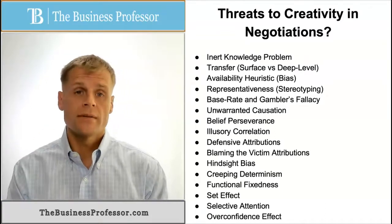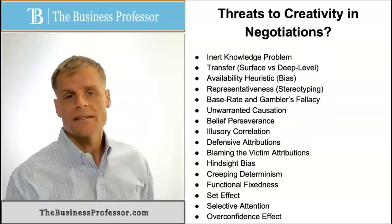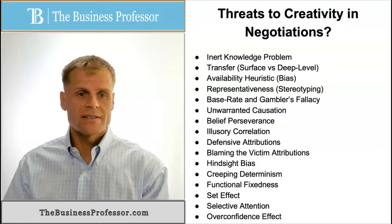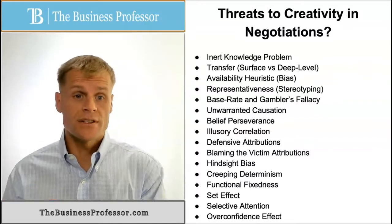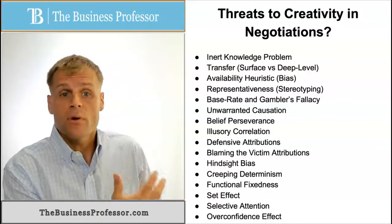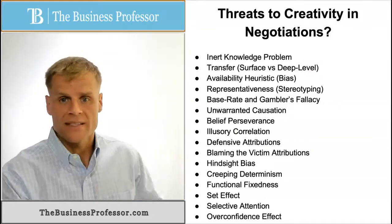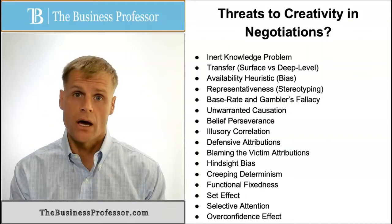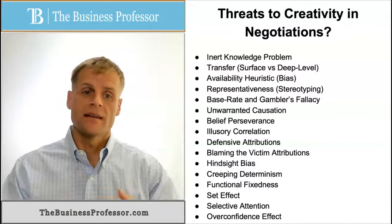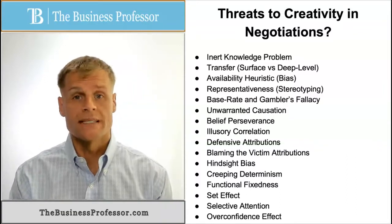Next is the availability heuristic — it's a bias. It's basically how prior experience, knowledge, and exposure affect us and our tendency to believe something or to use prior approaches because that's what we've been exposed to, the most common thing we've seen or know. So we rely on more of what we've seen rather than objectively looking at all the opportunities.